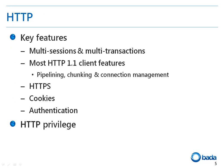First, I'll explain HTTP. The HTTP APIs are in the HTTP privilege group. HTTP is used to get web content using the hypertext transfer protocol. Bada provides the following HTTP features: multi-session and multi-transaction support, and all HTTP 1.0 client features, such as pipelining, chunking, and connection management functions. Additionally, the HTTPS secure protocol, cookies, and authentication are supported.